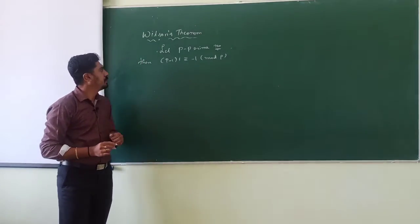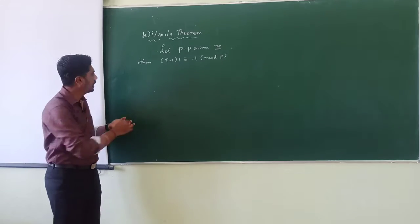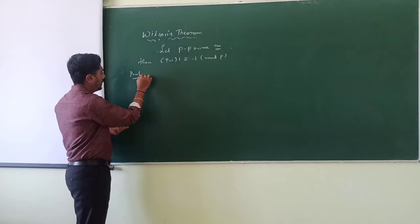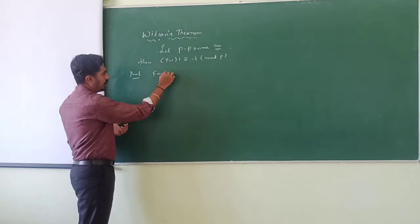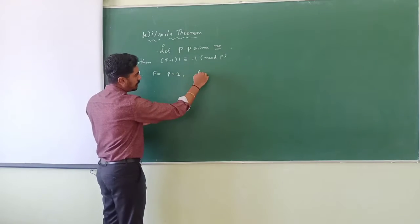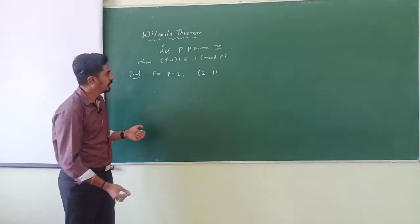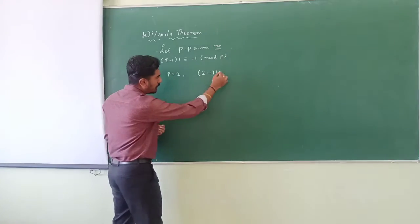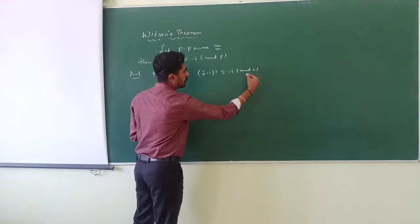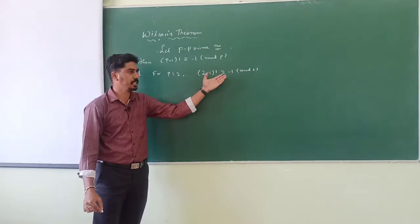To prove this, first let us check when p is equal to 2. For p equal to 2, (2 minus 1) factorial, which is 1, is congruent to minus 1 modulo 2, since 1 minus (minus 1) is 2, which is divisible by 2.